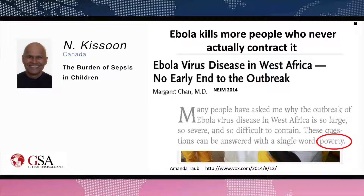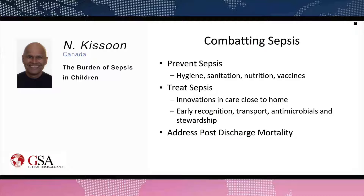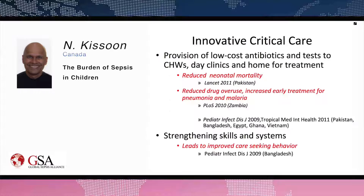To combat sepsis, we need to look at prevention measures: hygiene, sanitation, nutrition, and vaccines. We need to treat with innovations closer to home because many patients do not have resources to go to higher-level care. We need early recognition, transport, antimicrobials, and addressing post-discharge mortality. Innovative critical care addressing infectious disease and sepsis — by provision of low-cost antibiotics and tests to community health workers and day clinics — has reduced neonatal mortality and increased early treatment for pneumonia and malaria in Pakistan, Zambia, Ghana, Vietnam, Egypt, and Bangladesh, among others.